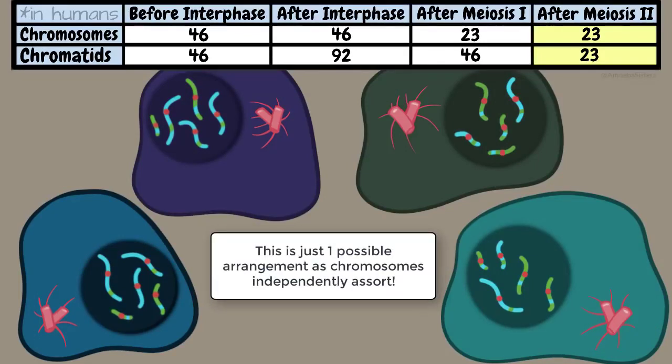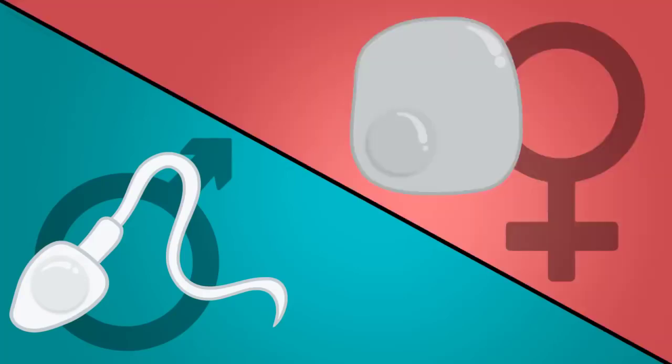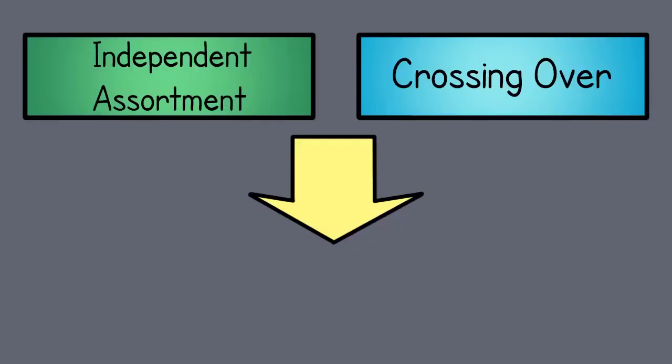Now keep in mind that meiosis in males produces sperm cells and in females it produces egg cells. Because of independent assortment and also crossing over, you're going to have variety.